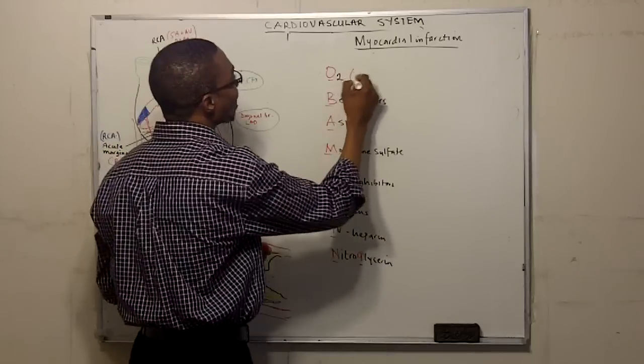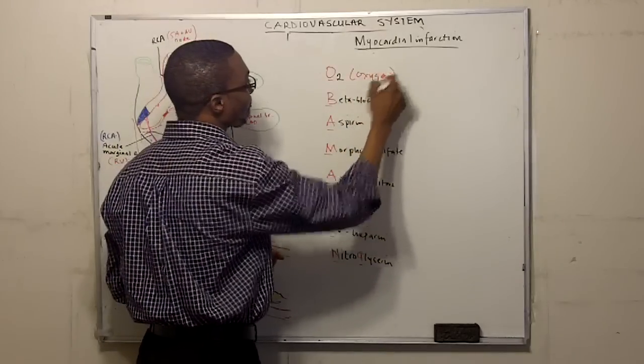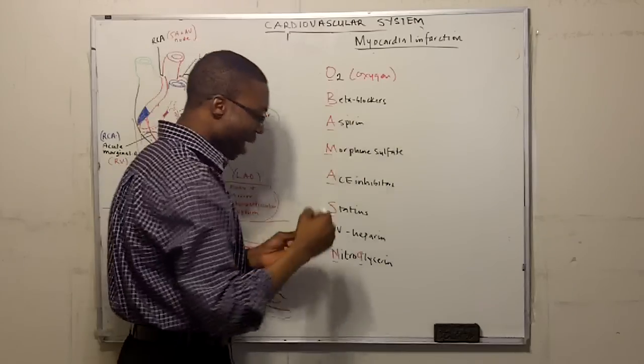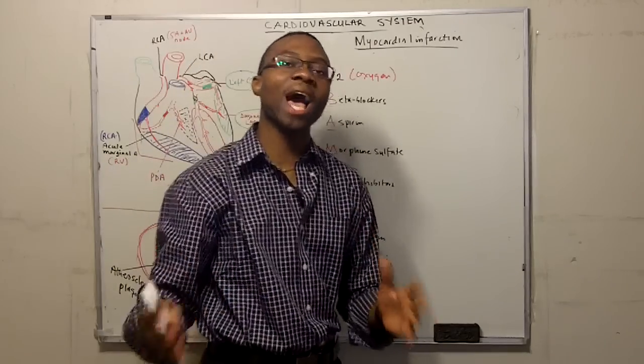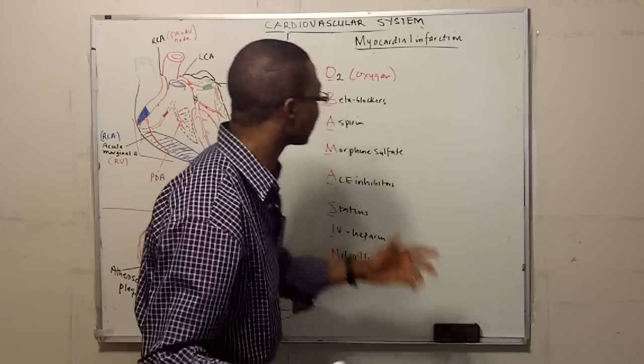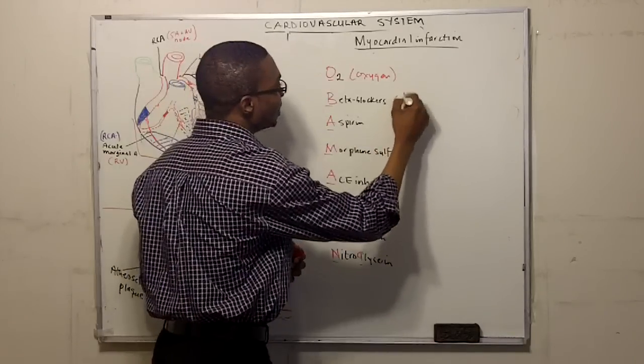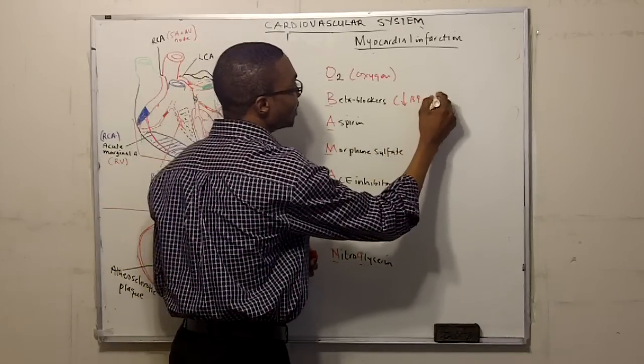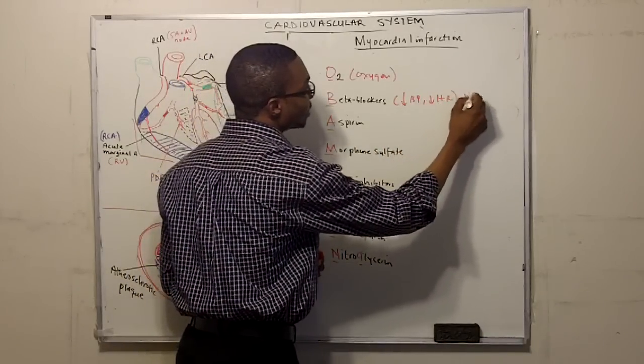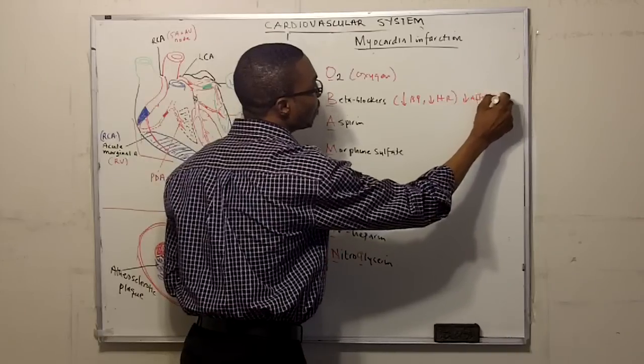The first thing we want to give them is oxygen. Beta blockers - remember beta blockers decrease mortality, very important. Beta blockers are going to decrease their blood pressure, decrease their heart rate, decrease their afterload.